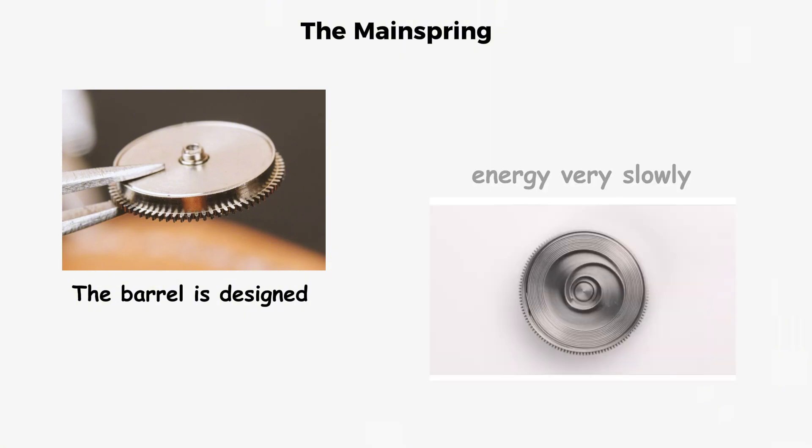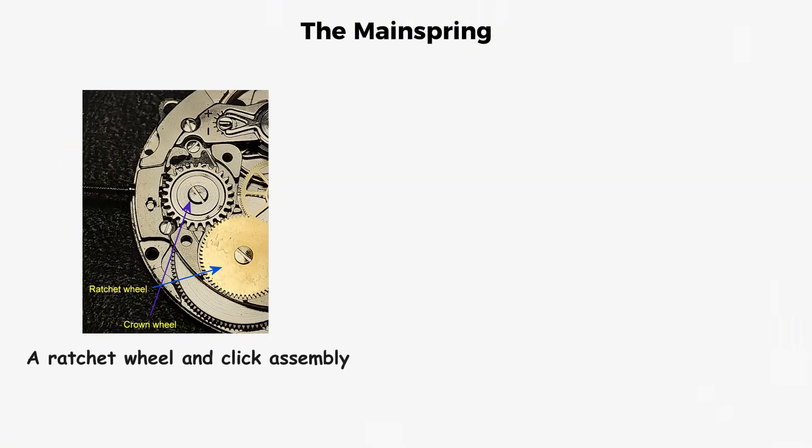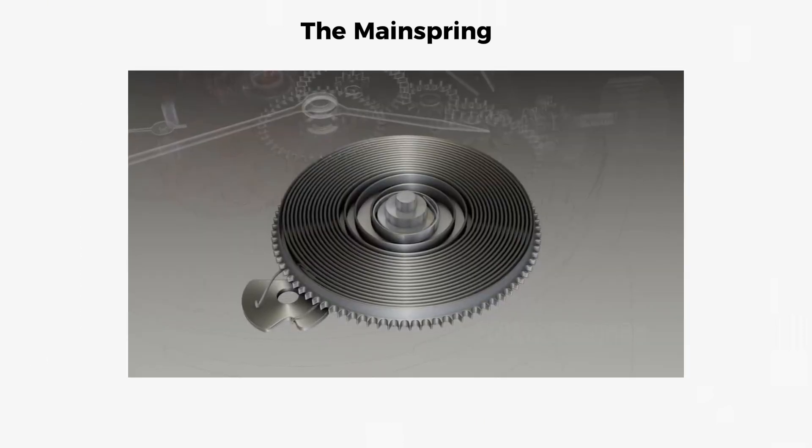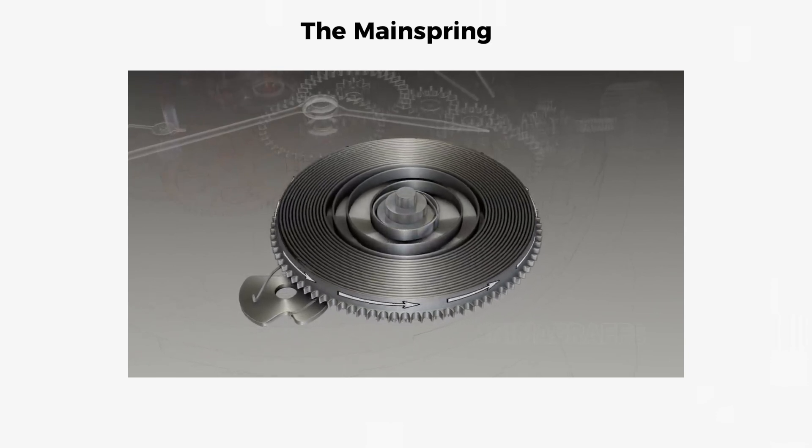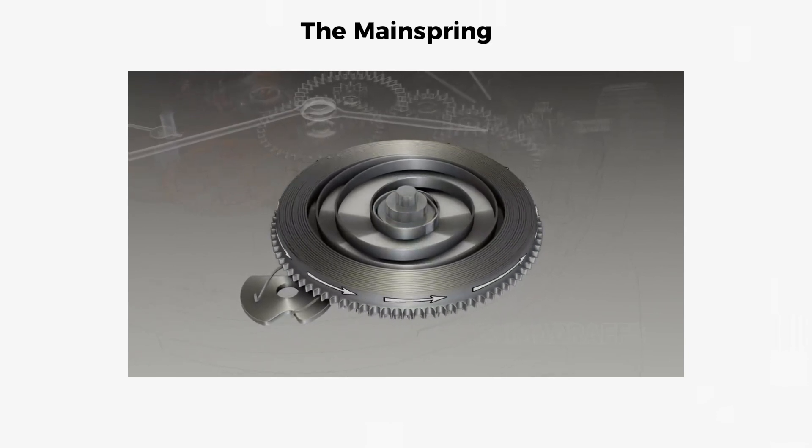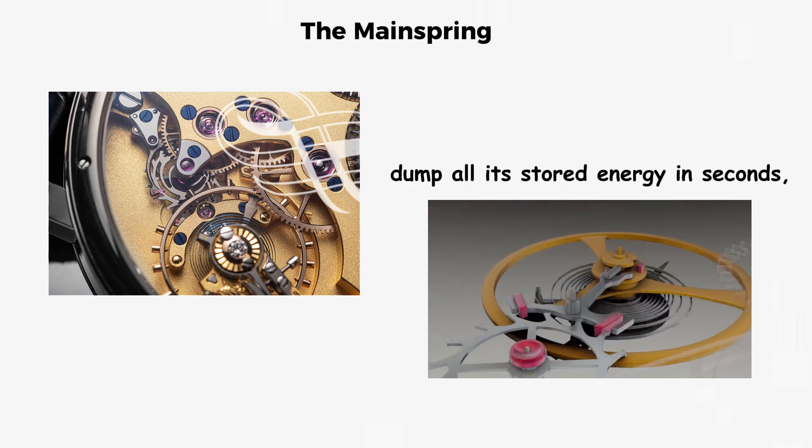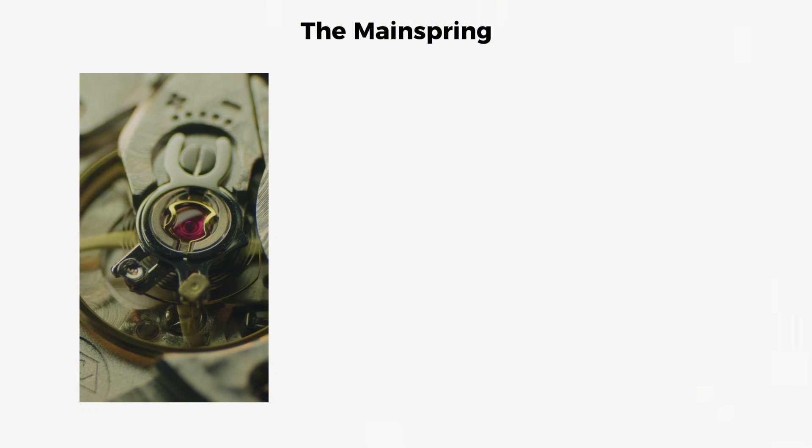The barrel is designed to release this energy very slowly. A ratchet wheel and click assembly allows the winding pinion to rotate in only one direction, which prevents the spring from unwinding backward, and ensures that power can only exit through the barrel's geared rim. Without this controlled release, the mainspring would dump all its stored energy in seconds, spinning the gears uselessly fast.